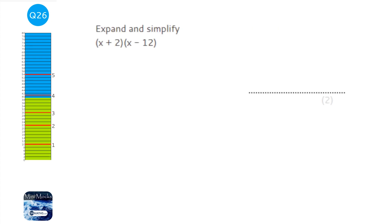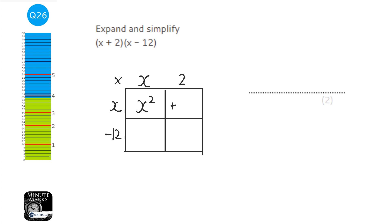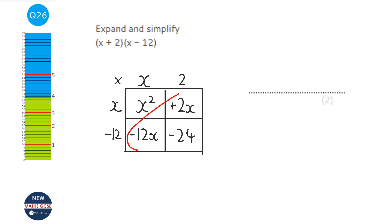Using the grid method to expand double brackets, we multiply everything in the first bracket by everything in the second. With (x + 2)(x − 12): x × x = x², 2 × x = 2x, x × −12 = −12x, and 2 × −12 = −24. Collecting the x terms: 2x + (−12x) = −10x. So the answer is x² − 10x − 24.